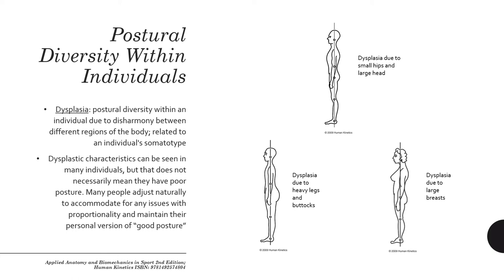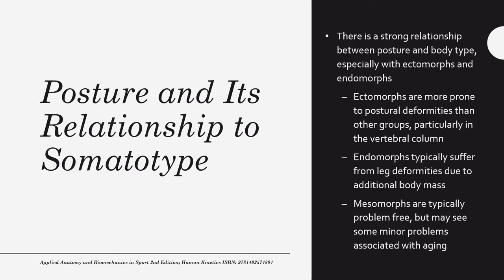Dysplasia characteristics can be seen in many individuals, but that doesn't necessarily mean it is poor posture — many people naturally adjust to accommodate proportionality issues and maintain their personal version of good posture. For example, dysplasia due to small hips and a large head requires compensating for greater mass at the top. Dysplasia can also result from heavier legs and a large glute muscle group. It's also very common in women with large breasts to carry their head forward to help minimize that issue and maintain good posture. So good posture doesn't always look the same — there is some diversity in what it looks like.